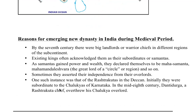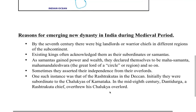Initially the Rashtrakutas were subordinate to the Chalukyas of Karnataka. In the 8th century, Dantidurga, a Rashtrakuta chief, overthrew the Chalukya overlord. So first the Rashtrakutas were under the Chalukyas, but then in the mid 8th century Dantidurga overthrew the Chalukya overlord and they started ruling on their own.